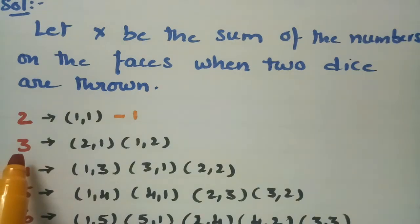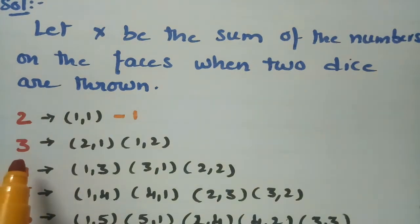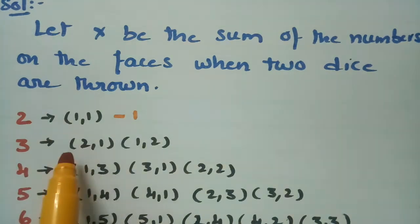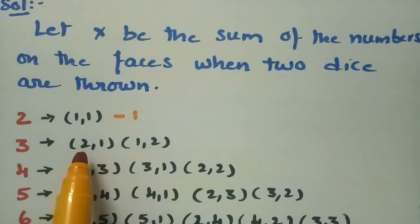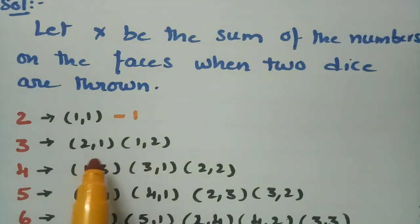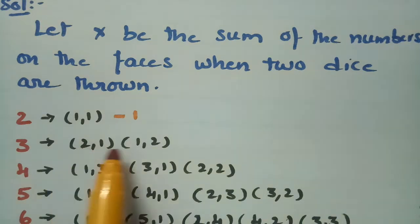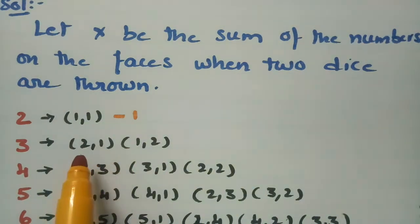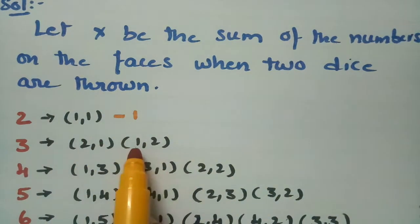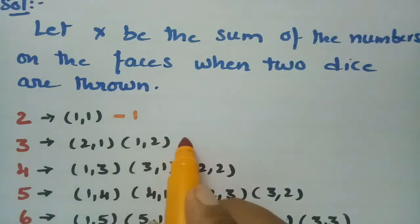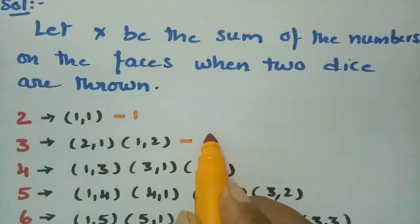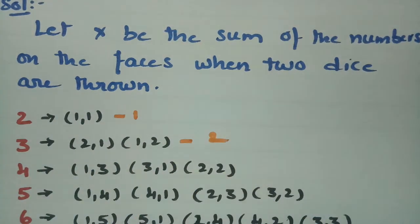For getting three as the sum of the numbers on the faces when using two dice, the chances here are (1,2) and (2,1). So two plus one or one plus two gives three, and there are two chances here.